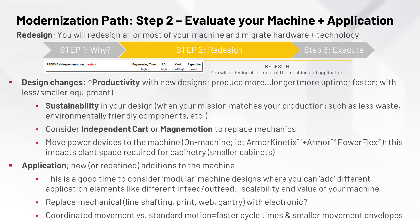Step 2 — Redesign. Let's consider a partial or full redesign of your machine. The implementation widget shows this as harder, but it can yield the biggest return on investment. Design changes — modifying and changing your machine or application — can be advantageous. Consider new designs that embed new technologies like independent cart and MagnaMotion instead of typical actuators into the mechanical design, making your machine faster, smaller, and more capable.